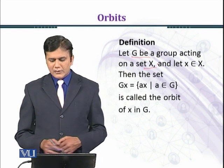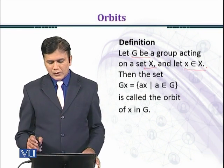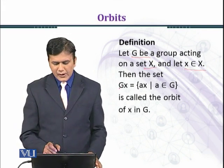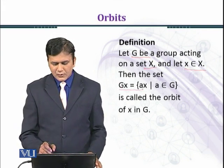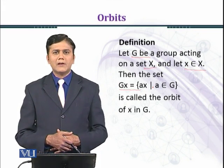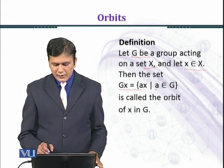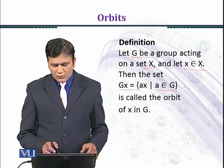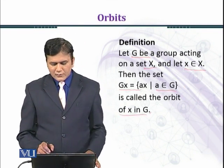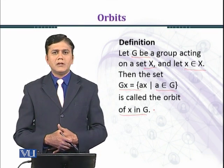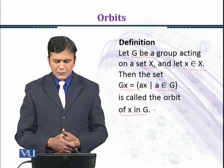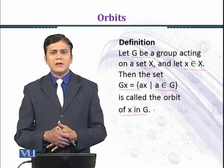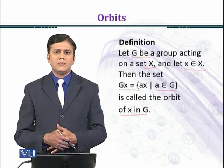Let x belong to X. Then the set G·x, defined as the set of all a·x such that a belongs to G, is called the orbit of x in G. So G·x contains all elements of the form a·x such that a belongs to G.